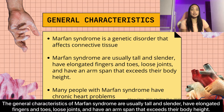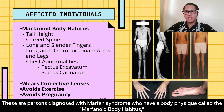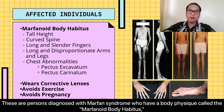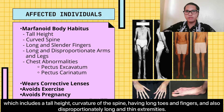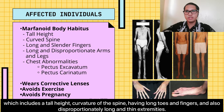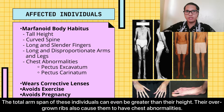The general characteristics of Marfan Syndrome include being usually tall and slender, having elongated fingers and toes, loose joints, and an arm span that exceeds their body height. These individuals have a body physique called the Marfanoid Body Habitus, which includes tall height, curvature of the spine, long toes and fingers, and disproportionately long and thin extremities. The total arm span of these individuals can even be greater than their height.